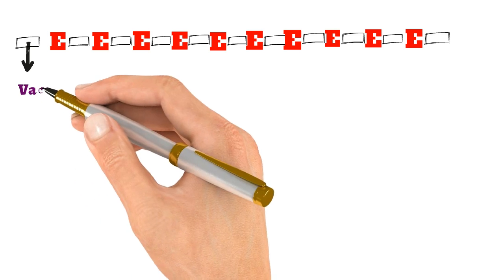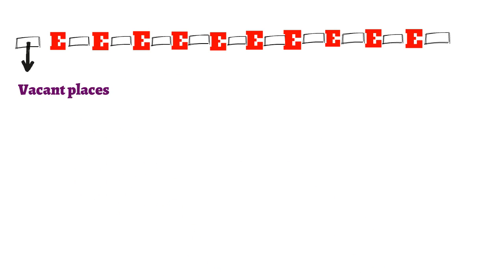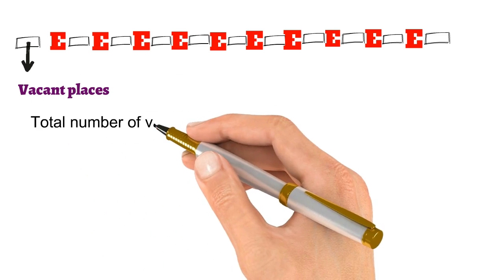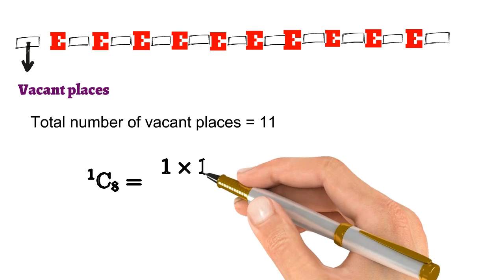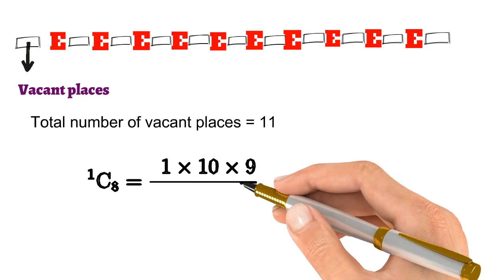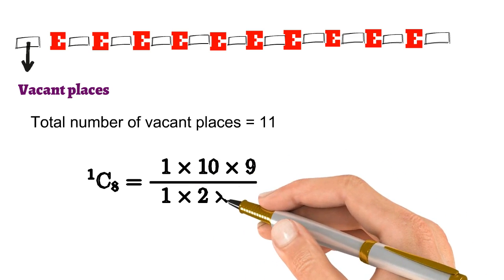The total places is 11 and you have 8 physics books with you. How you can solve this problem? N is equal to 11 and R is equal to 8. 11C8 is the answer. When you solve it, you will get 165.